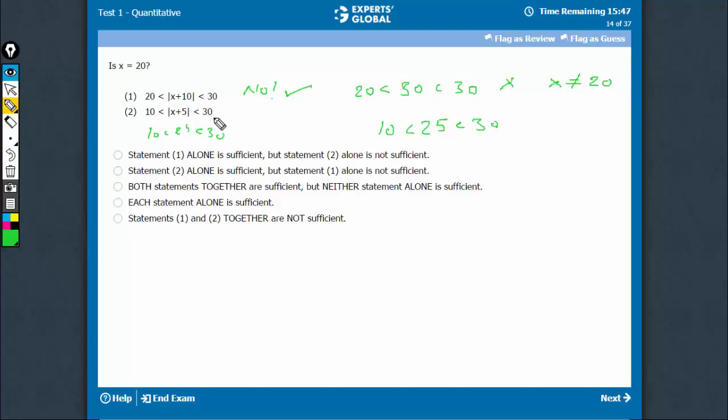So, yes as well as no is possible. In case of x is equal to 20, we'll get yes as an answer. In case of x is equal to 21 or 19 or 18, we'll get no as an answer. Since yes and no both are possible, this statement is not sufficient. Statement 1 is sufficient, statement 2 is not. The answer is option A.